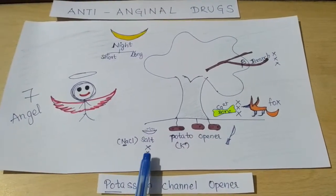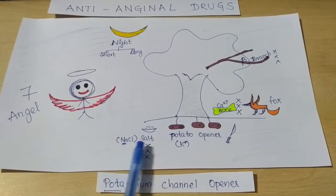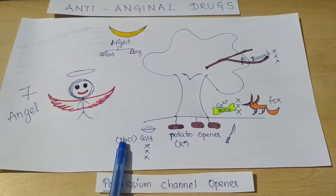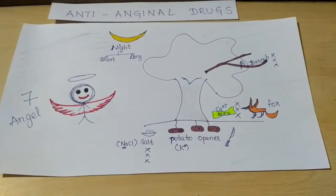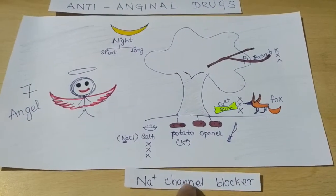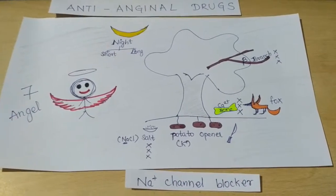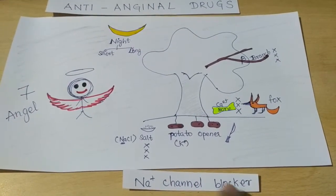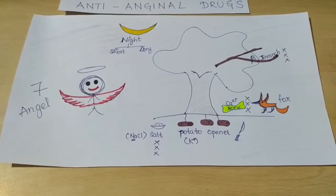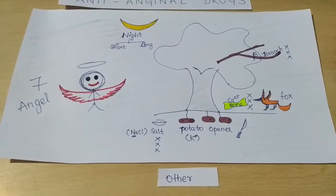One should not eat too much salt with potatoes. Salt inhibitor — the chemical formula for salt is NaCl, and Na is sodium. So this tells us the class of drug which is the sodium channel blocker. That means we should not eat too much salt with potatoes. These are the six classes of drugs, and the seventh is 'others'.